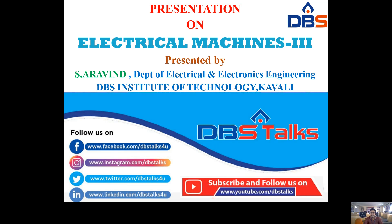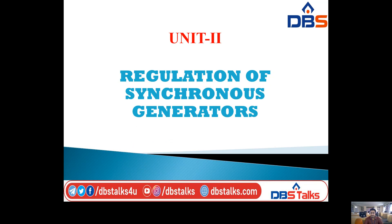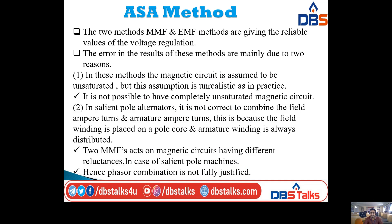In the previous classes, various methods to determine voltage regulation of an alternator or synchronous generator were discussed: the EMF method, MMF method, and ZPF method. In this class, the ASA method — that is, the American Standard Association method — will be discussed. This is the last method to determine voltage regulation of an alternator. After that, SCR (short circuit ratio) and Blondel's two reaction theory will also be covered.